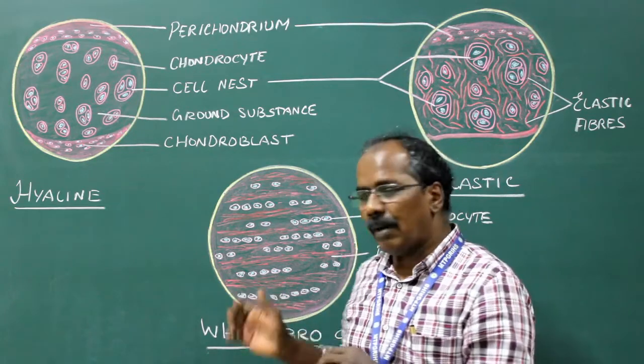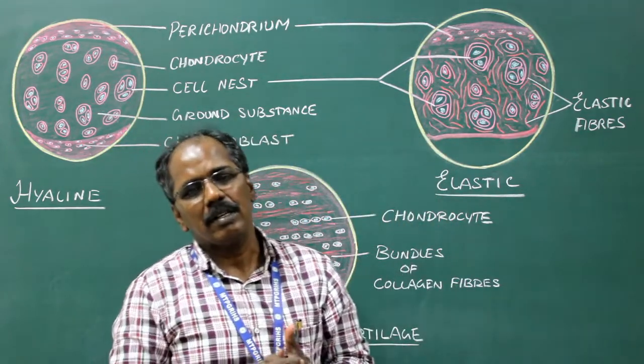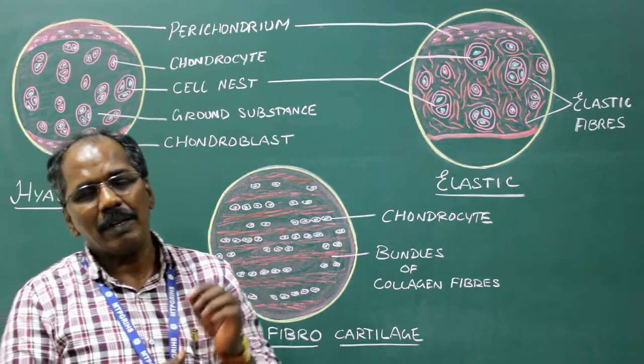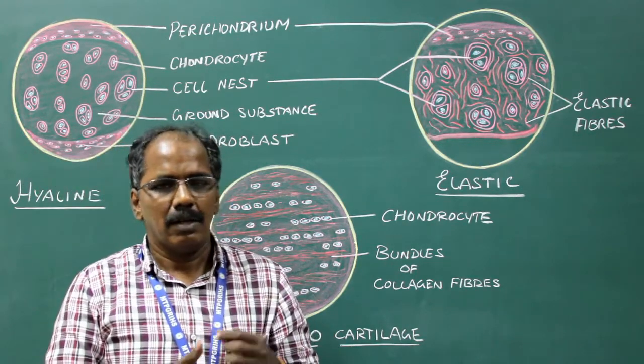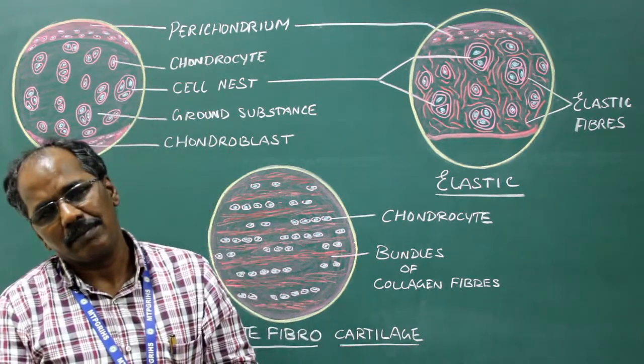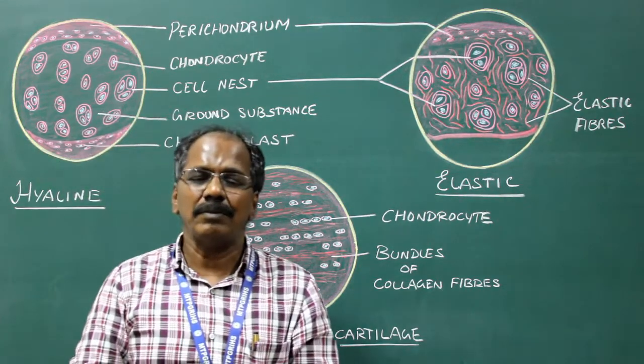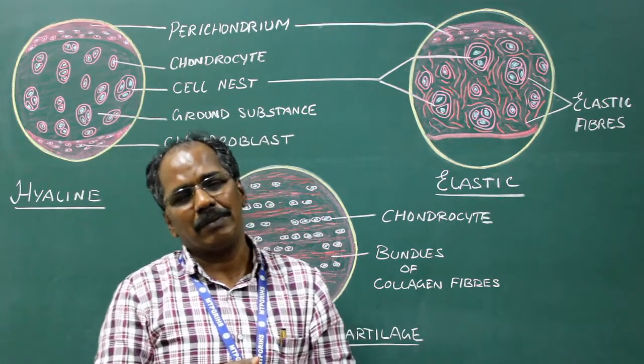Examples for white fibrocartilage: secondary cartilaginous joint, intervertebral disc, pubic symphysis, glenoid labrum, and acetabular labrum.